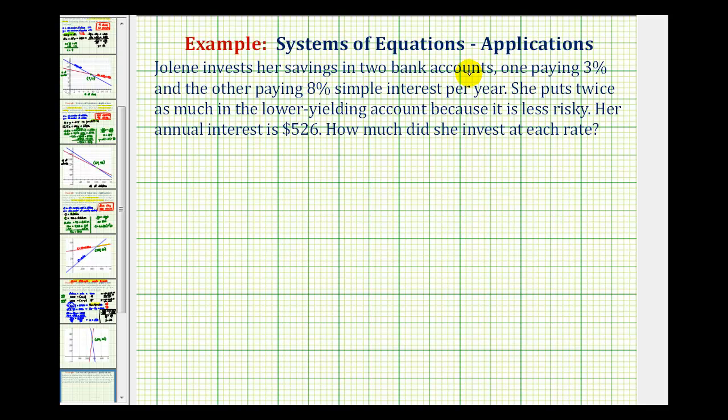Jolene invests her savings in two bank accounts, one paying 3% and the other paying 8% simple interest per year. She puts twice as much in the lower yielding account because it is less risky. Her annual interest is $526. How much did she invest at each rate?